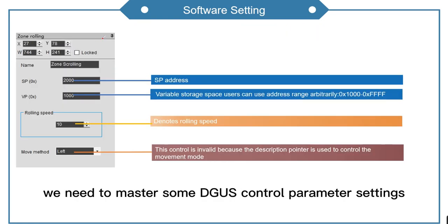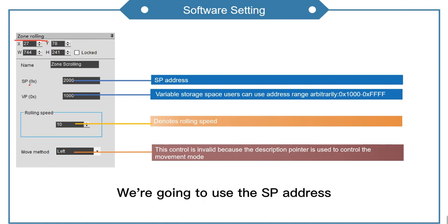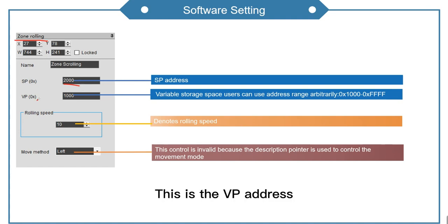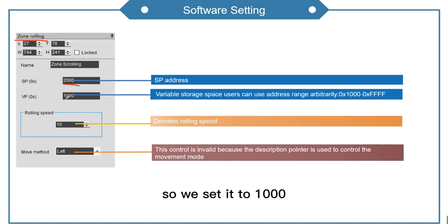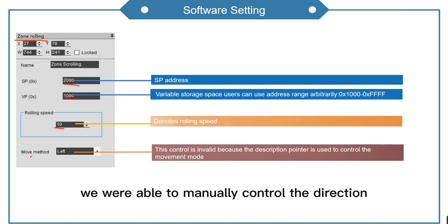Next, we need to master some DGUS control parameter settings. This is the control setting for zone rolling. We're going to use the SP address, so I set it to 2000. This is the VP address — 1000 to FFFF is available for the user to set, so we set it to 1000. Set the scrolling speed to 10. Since we used SP, we were able to manually control the direction.